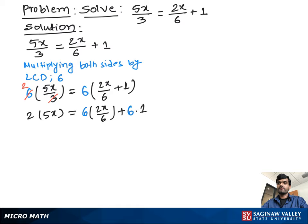Then 2 times 5x which is equal to 10x equal to 6 and 6 cancel out. So we have left 2x plus 6 times 1 which is 6.